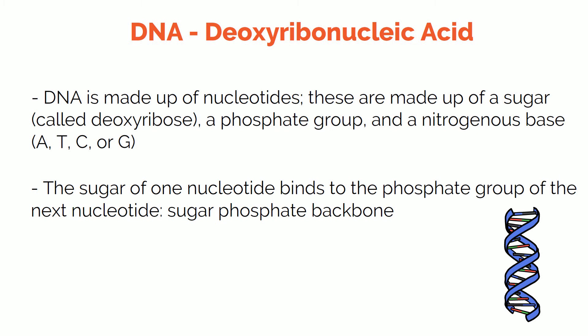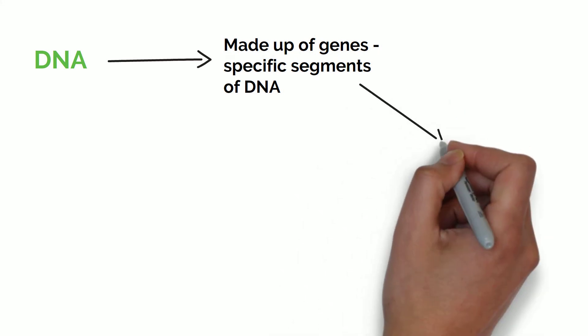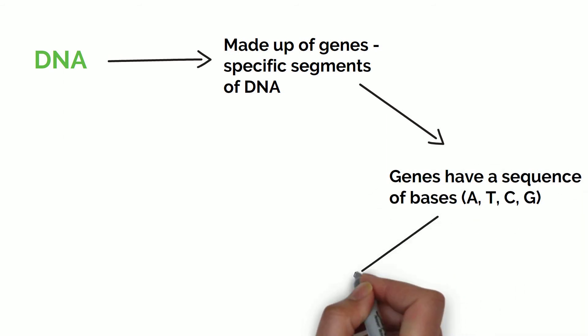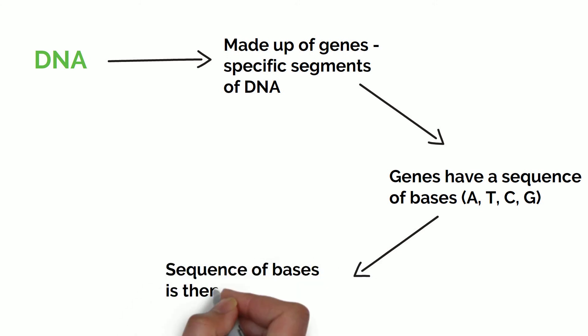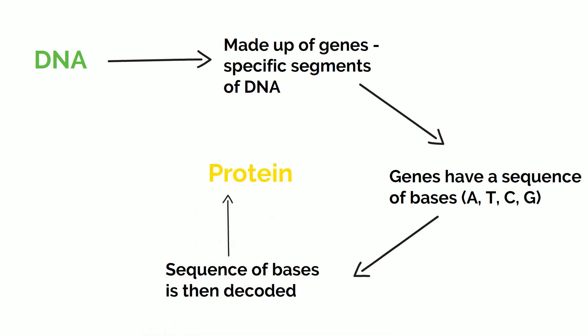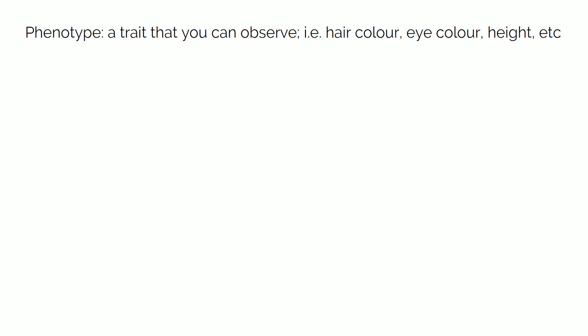So your existence and mine and everyone you know is only possible because of the genetic material that is encoded in this molecule. As mentioned before, specific segments of the DNA chain are called genes because the sequence of bases in those segments are actually a code. This code is then decoded in a process called protein synthesis. The final result is a protein, which is then used wherever it is needed and this gives rise to a phenotype — a trait that you can observe, so hair color, eye color, height, etc.